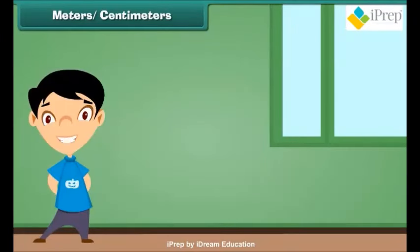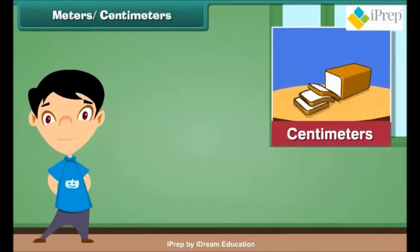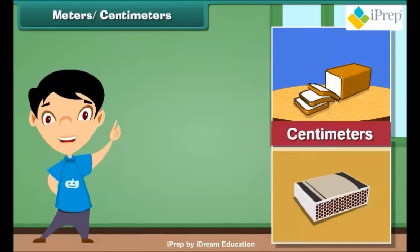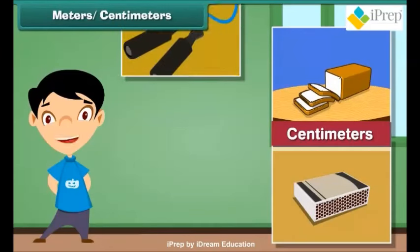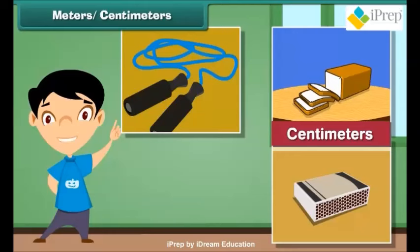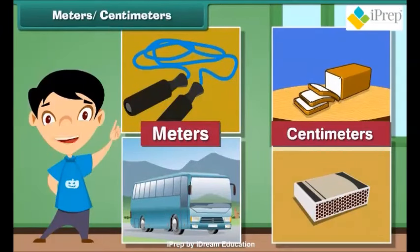Let us compare the length of various things. Some of the objects have their length in meters while some of them are so small that they are measured in centimeters only. Length of a bread loaf is expressed in centimeters. The length of a matchbox is expressed in centimeters. The length of a skipping rope is expressed in meters. The length of a bus is expressed in meters.